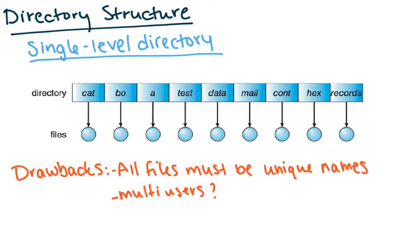The first way we can look at directory structure is to structure it as a single-level directory — so there's just one directory. A drawback, the obvious thing, is that all files must have unique names. This is not really practical, especially when you have multiple users.